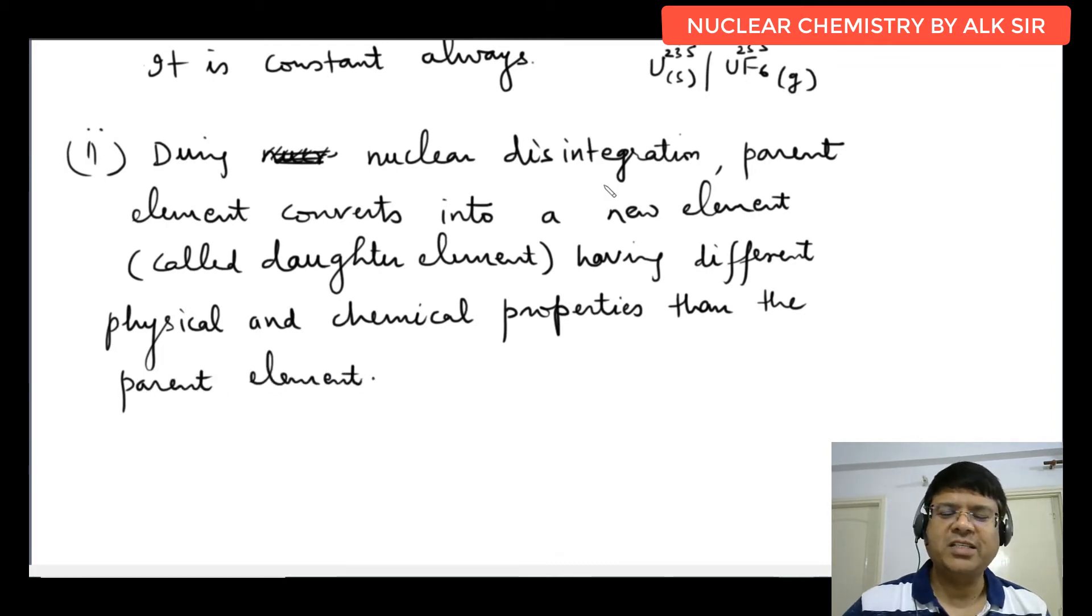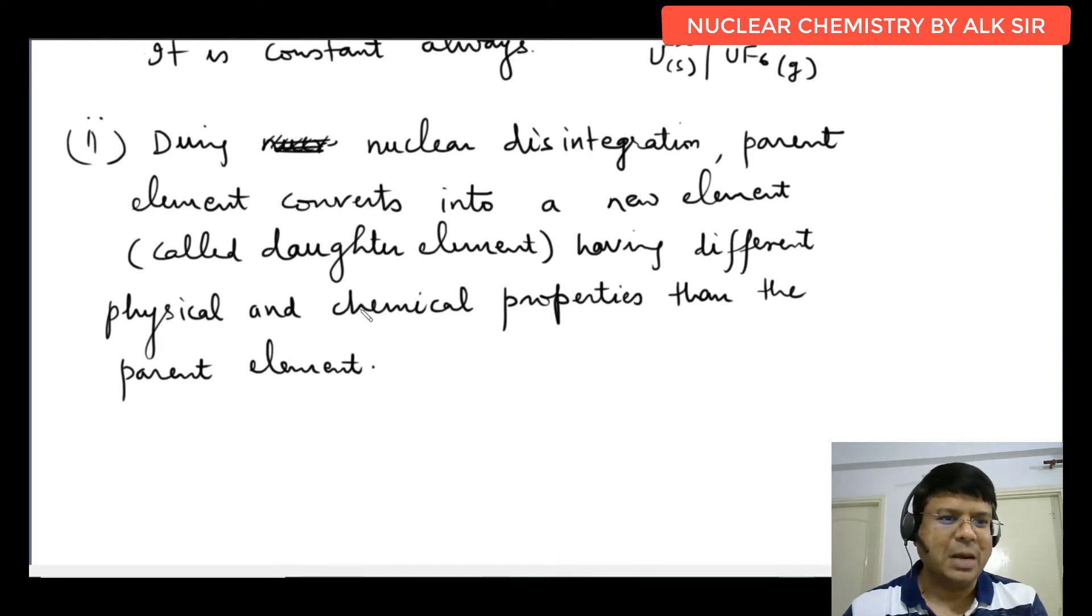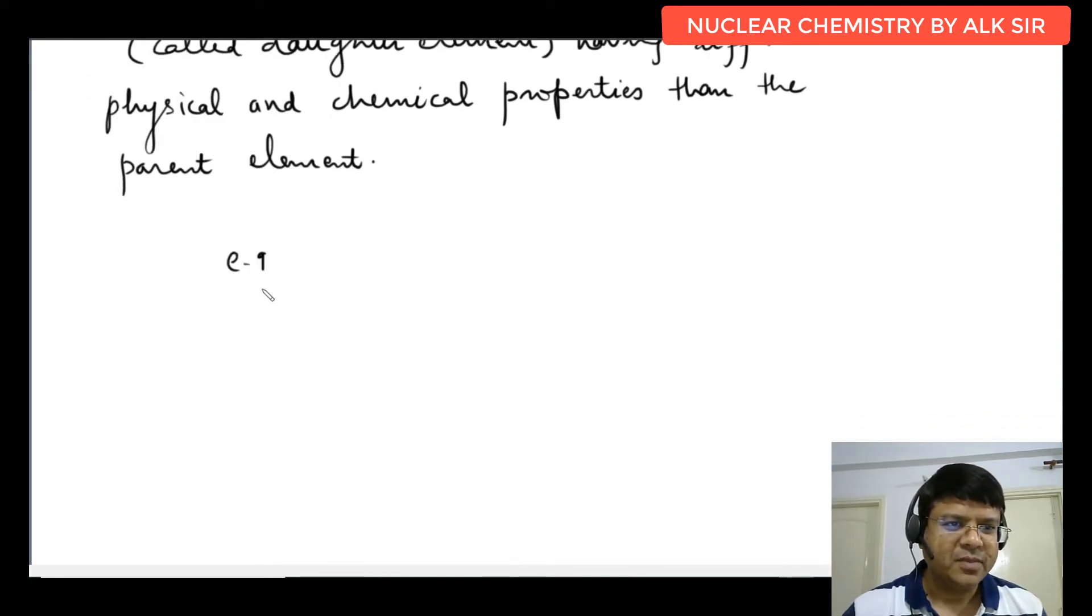During nuclear disintegration, parent element converts into the new element, jise hum daughter element bol rahe hain. Aur jab element different ho gaya, obviously uski physical and chemical properties all will be changed. For example, maanlo carbon hai 6 C-14, nitrogen mein convert ho gaya beta particle decay se 7 N-14 plus minus one e zero, this is beta decay.